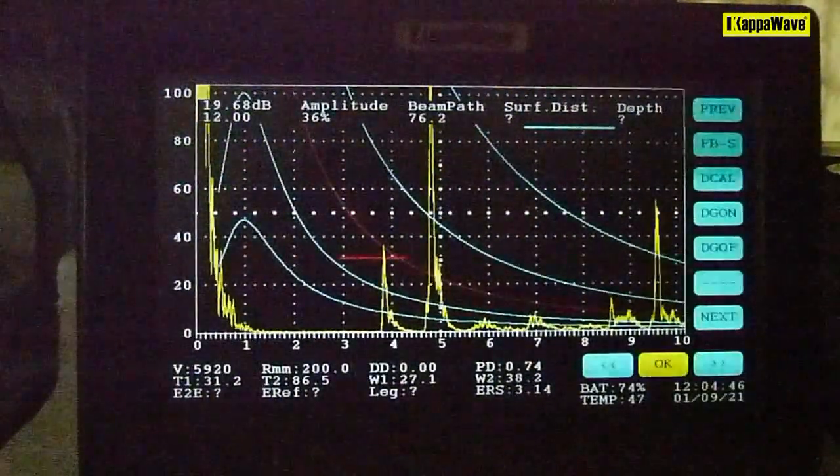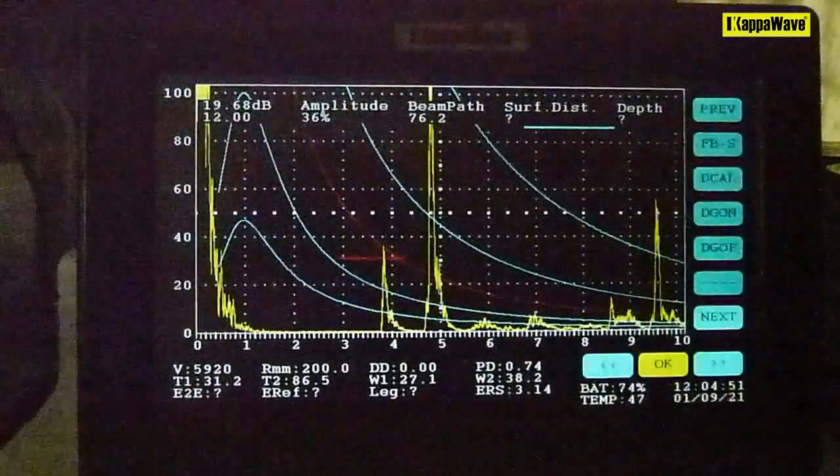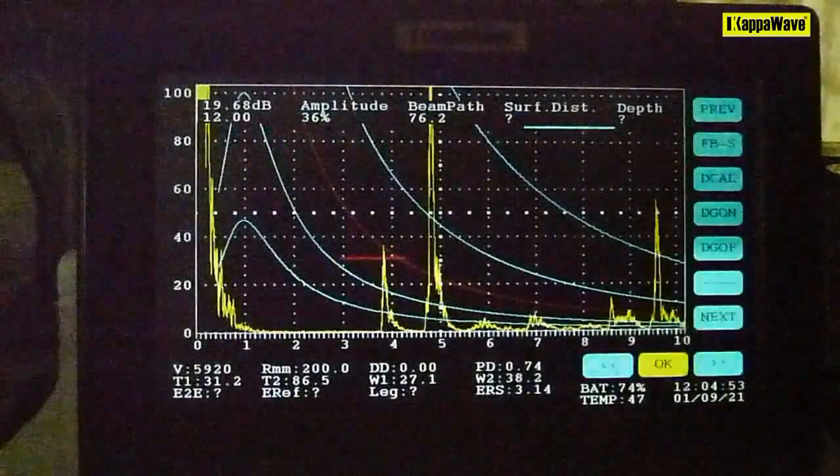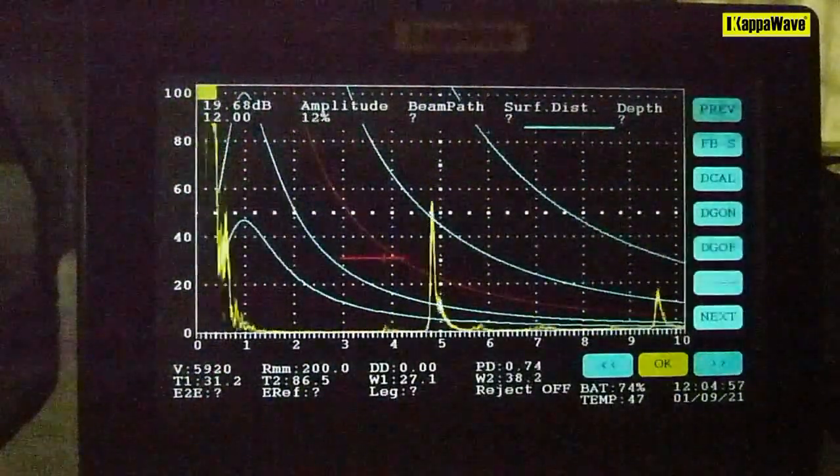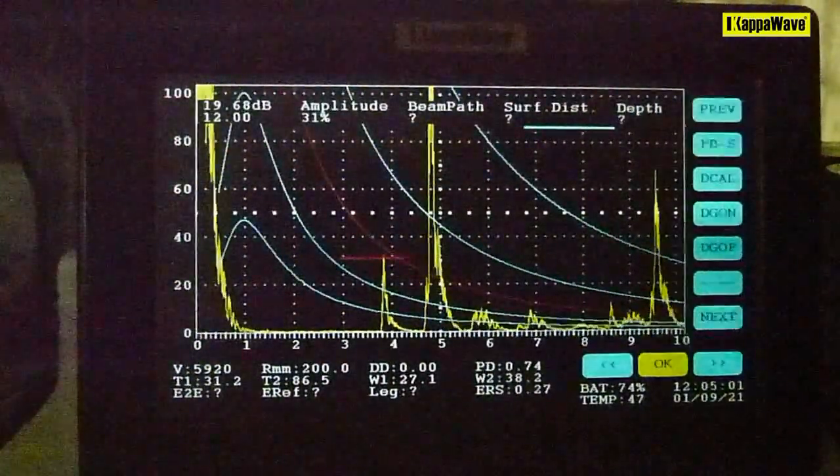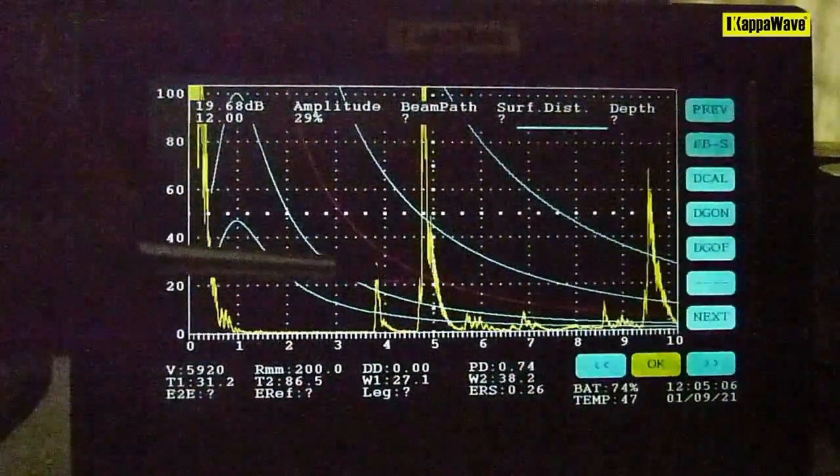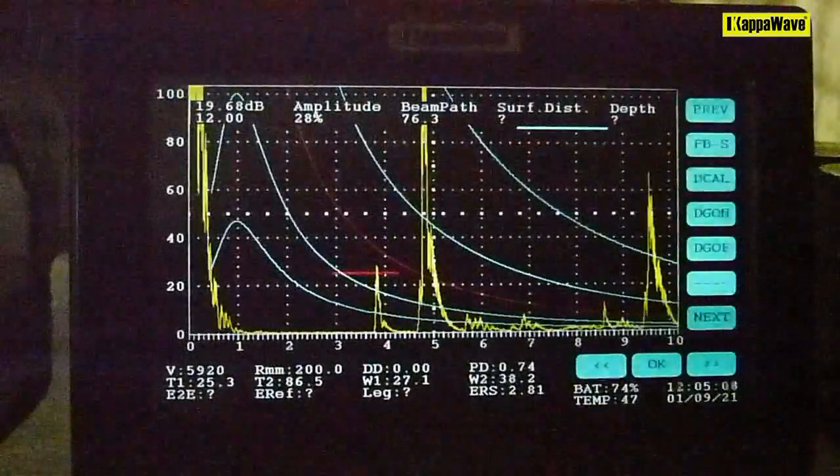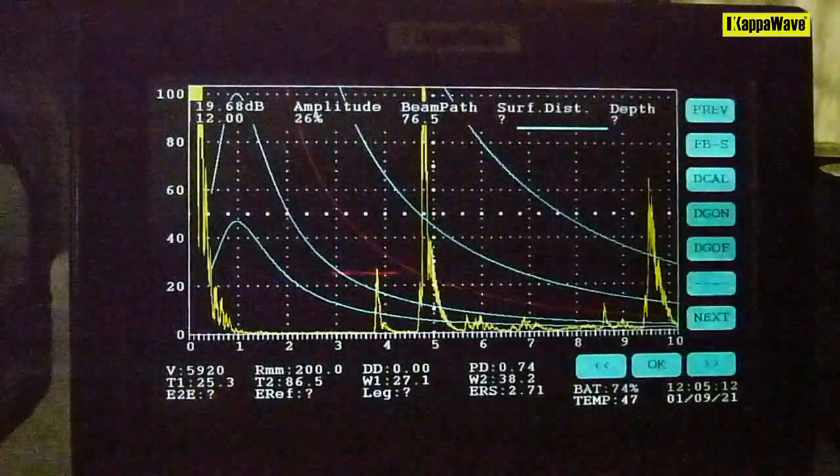Now I'll move to the next block that has a flat bottom hole of about 2.7 millimeter. I'm on to the next block here and as the signal comes up here, if you place the gate on this signal, it should give you that value. Right now it reads as 2.76 or 2.8 millimeter.